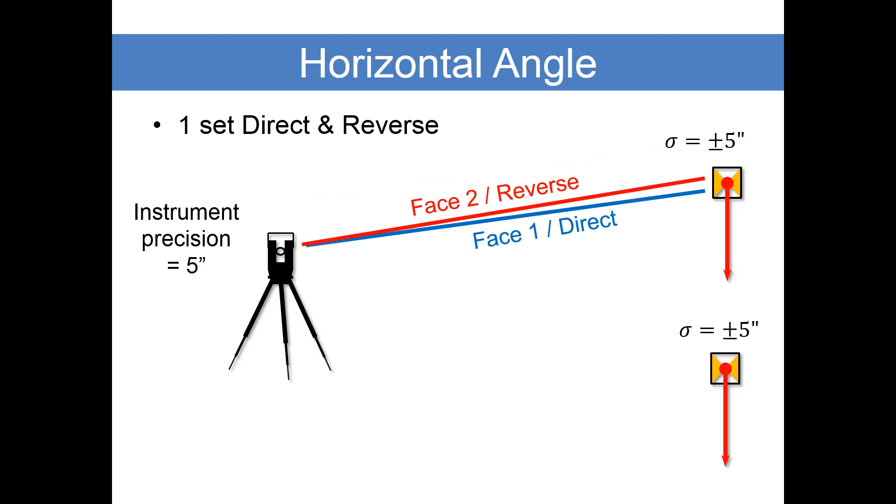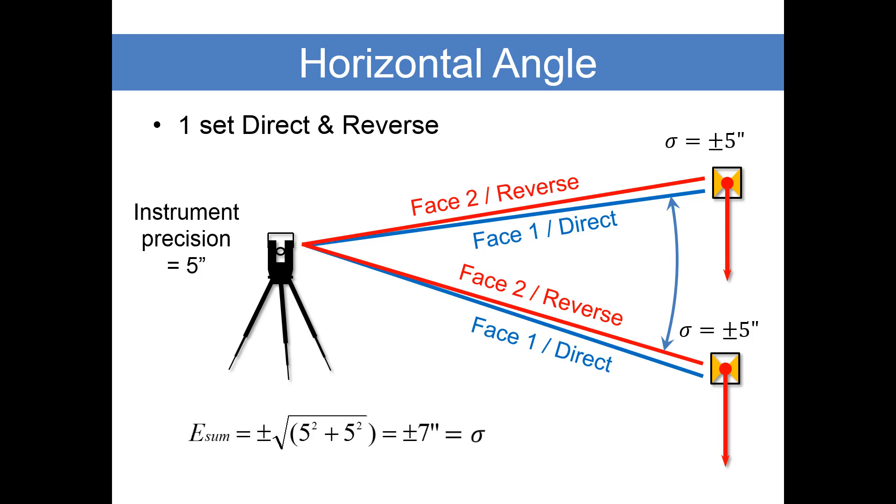Let's apply this to an angle. We're going to turn this angle with direct and reverse method. We're going to backsight in direct, then backsight in reverse, then foresight in reverse. We've got a direction to the backsight and we measure direct and reverse to the foresight. This is a standard deviation of plus or minus 5 seconds at each of these.